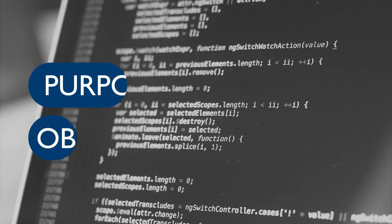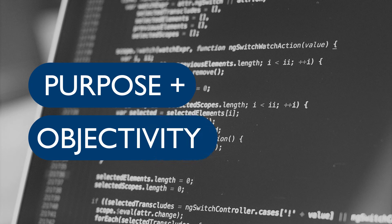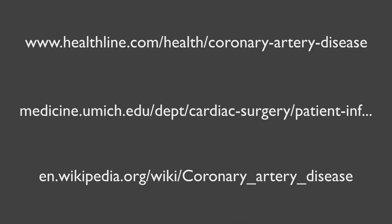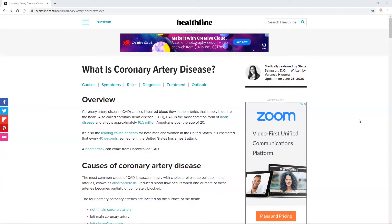Now we'll consider the purpose and objectivity of the website. One rough way to assess a page's purpose is to see what domain the website has. .com usually means that website is a commercial business; .edu is for schools, universities and educational institutes; and .org is for community, not-for-profit and political organizations. Also think about why someone has decided to collect and publish this information, and look at the type of language used.